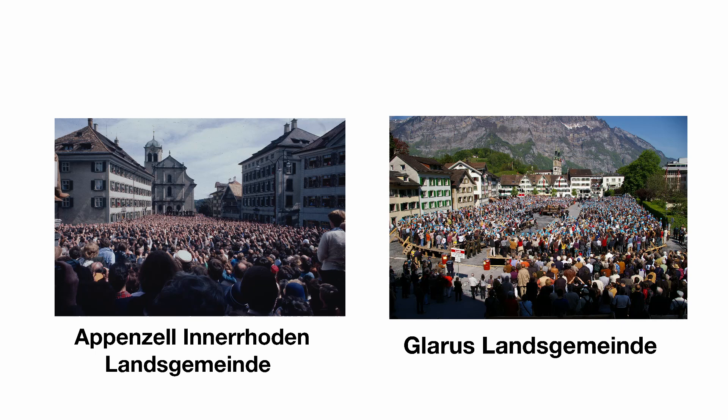The assembly votes on a series of ballot questions, decided either by raising hands or voter cards depending on the canton. In Glarus, citizens are able to propose amendments to existing laws or introduce new ones, while deliberation is more limited in Appenzell Innerrhoden by contrast.